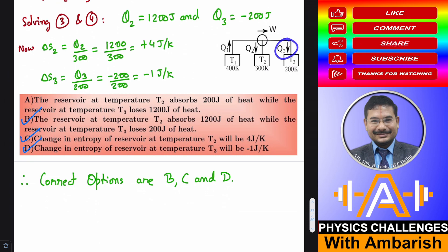Because Q3 is minus 200 joule. That means working fluid is rejecting minus 200 joule. Which is equivalent to saying that working fluid accepts 200 joule. So option B is correct.